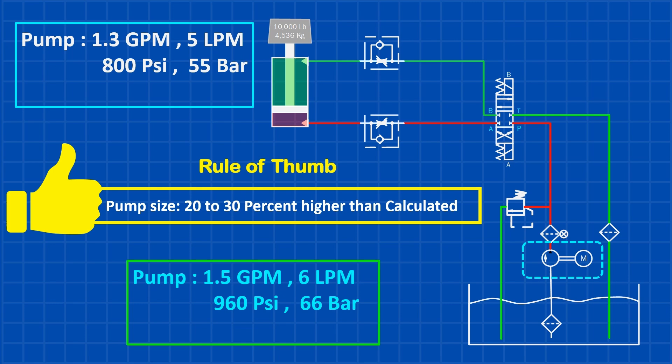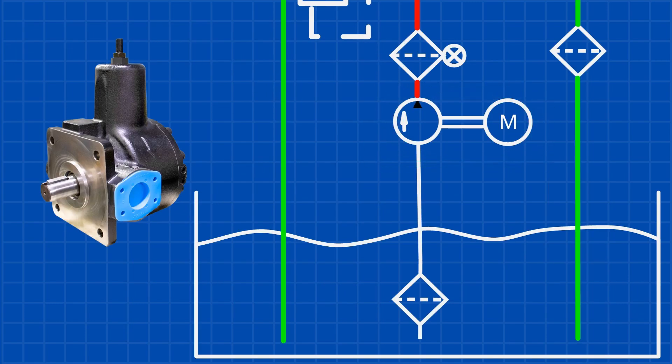This extra capacity will compensate for pressure drops in the piping, valves, and other components. For our design, I'm using a pressure compensated pump shown by the arrow on the left side of the pump. I'll explain why in a minute. This type of pump automatically adjusts its flow to keep the system pressure at a set level, which helps prevent wasted energy and overheating. When the system doesn't need much flow, the pump backs off, only supplying what's needed. And if the pressure hits its limit, the pump almost stops flowing while still maintaining pressure.